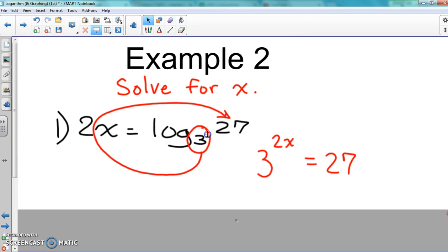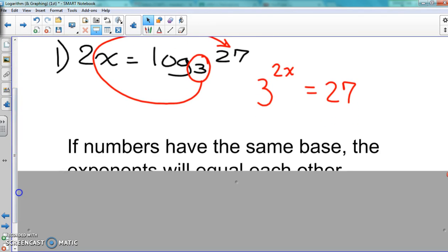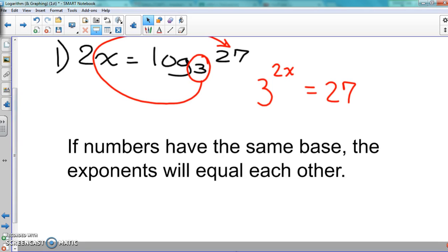All right, so at this point we're trying to figure out what's going on for X and how we're gonna be able to get to that. It's probably not gonna be a whole number because we know three to the third power gives us 27, and I'm not gonna be able to put anything in there to make it go from two to three. So here is a great rule that happens all the time that you're gonna have to remember. If numbers have the same base, the exponents will equal each other.